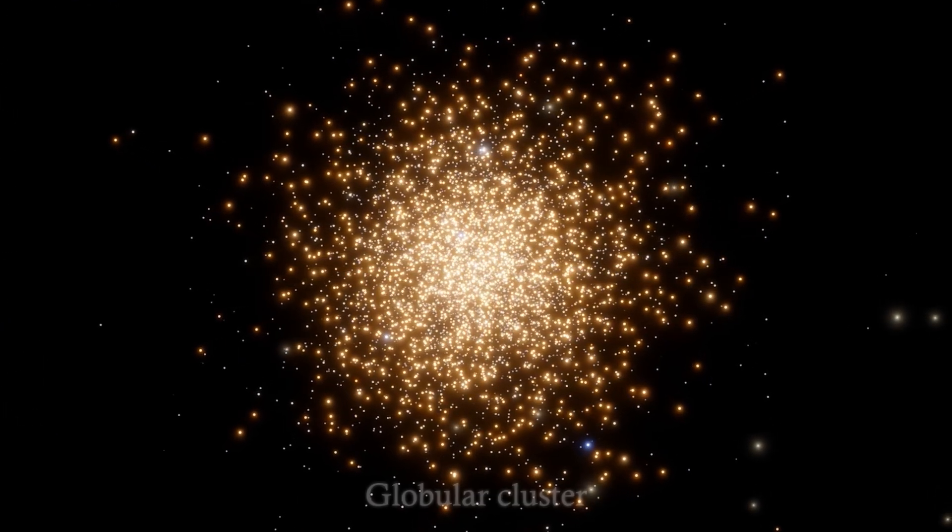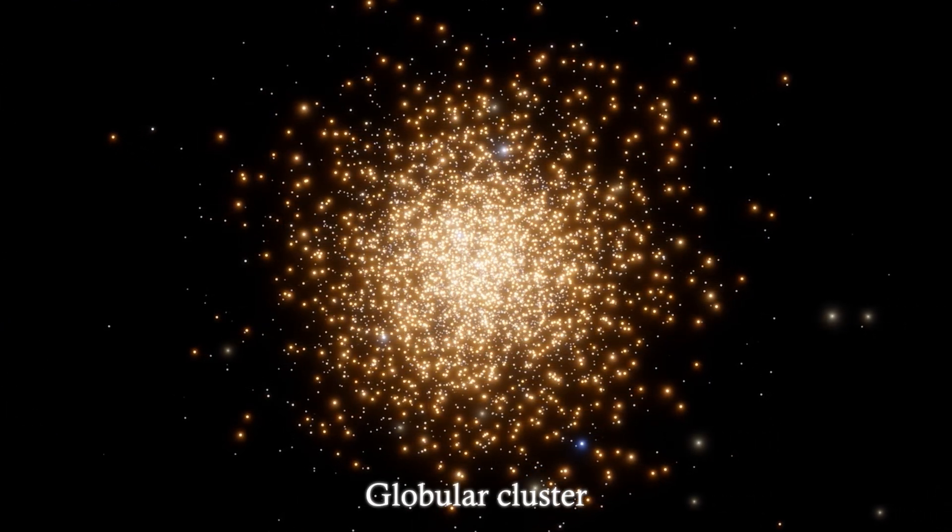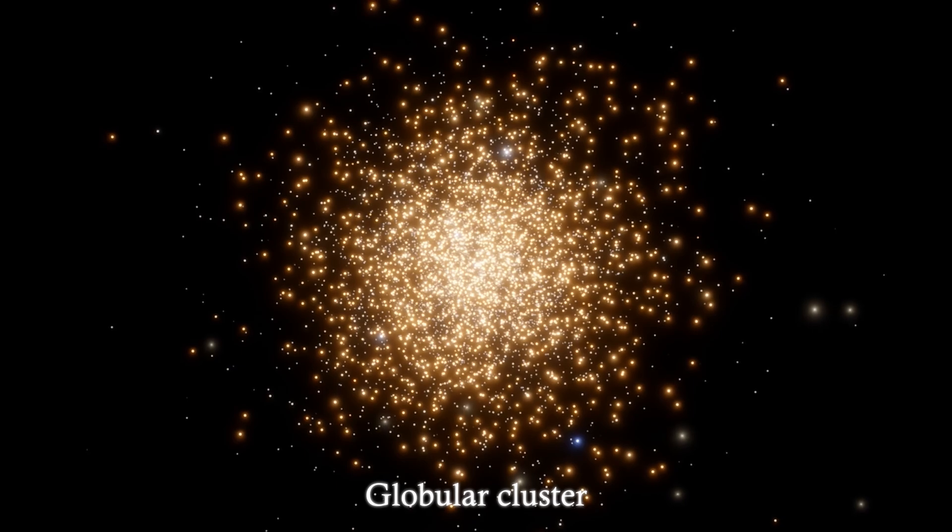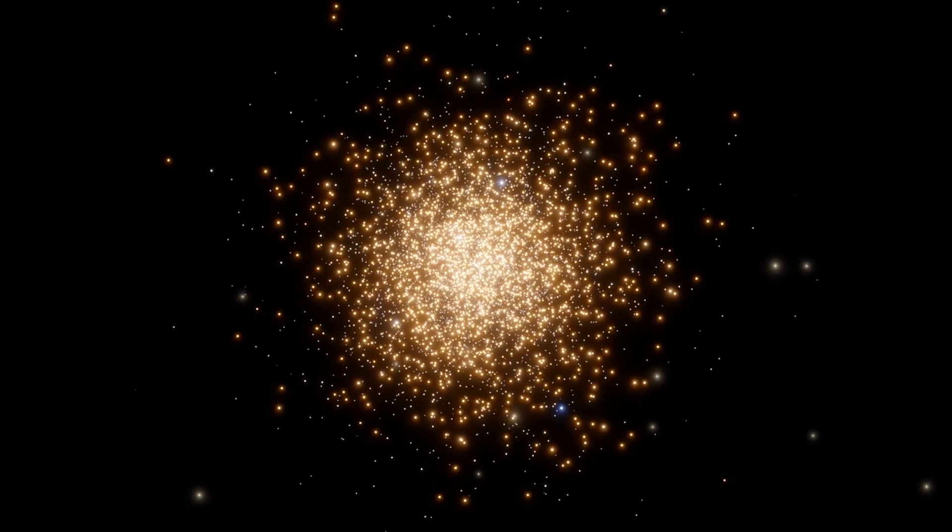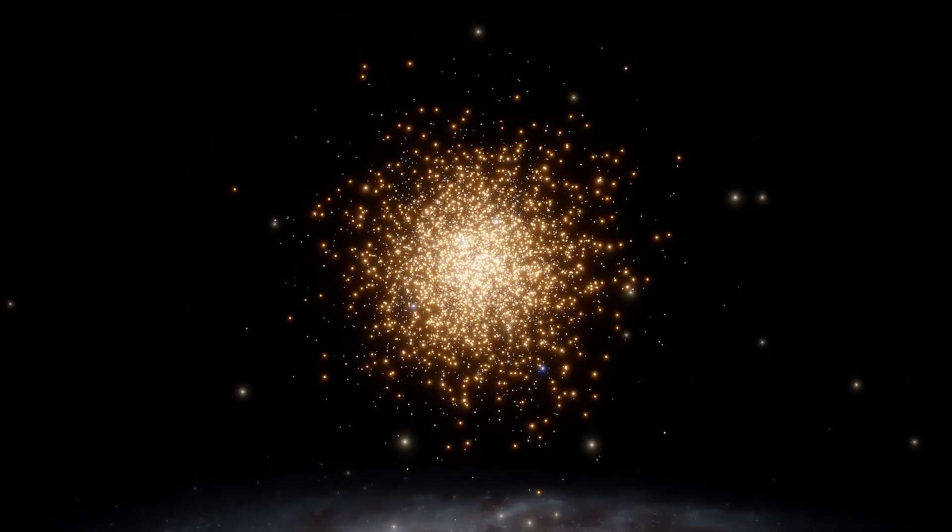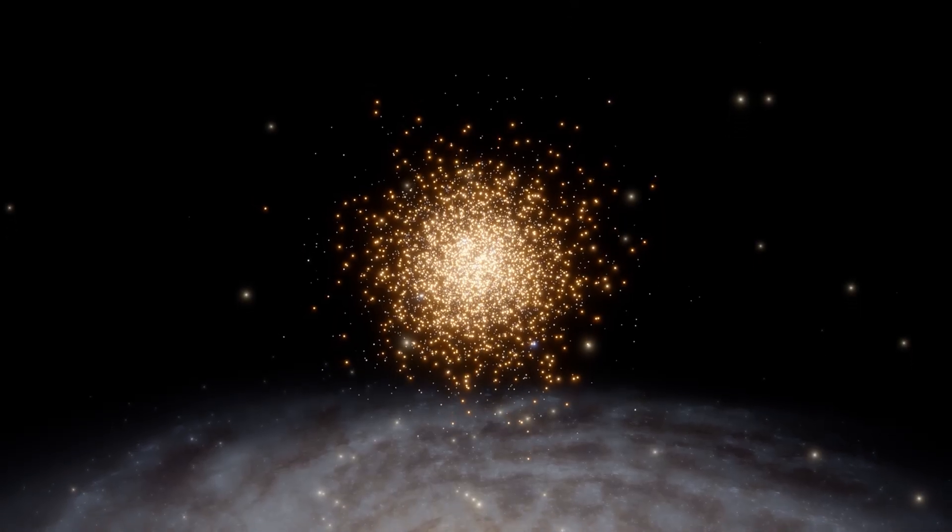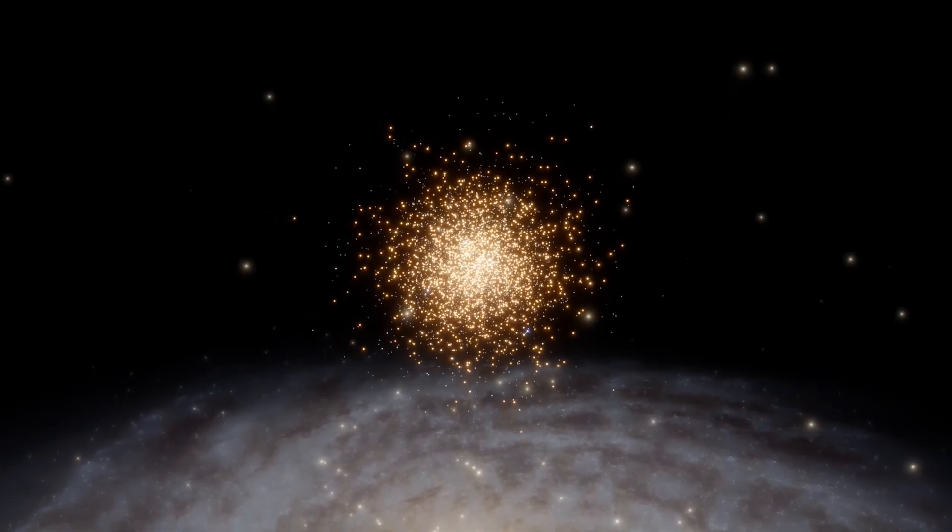For example, globular clusters. Globular clusters are distributed in a way that surrounds the galaxy. And in fact, this structure holds the key to understanding the origin and growth of the Milky Way.